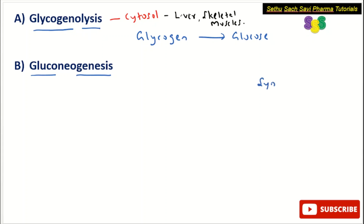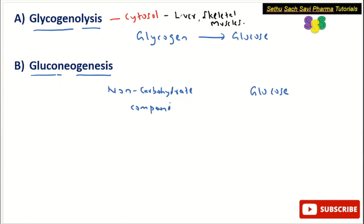Choice B: gluconeogenesis. Gluco means glucose and genesis means synthesis, so it is the synthesis of glucose from a non-carbohydrate compound. That process is called gluconeogenesis. You can remember this: the 'n' indicates non-carbohydrate compound.